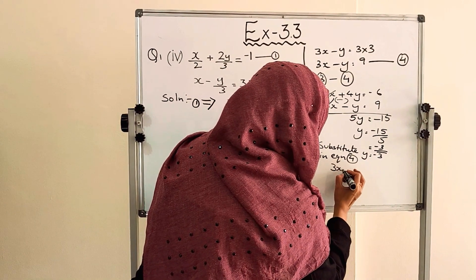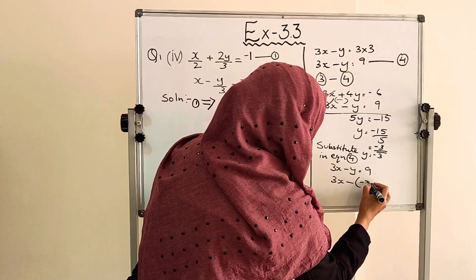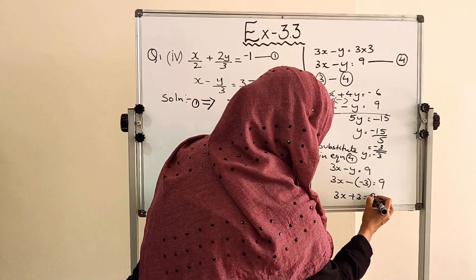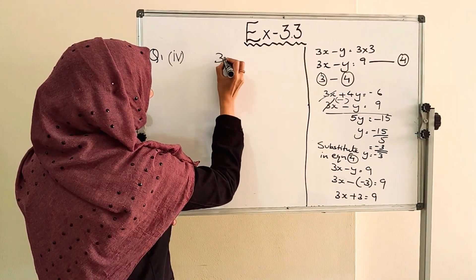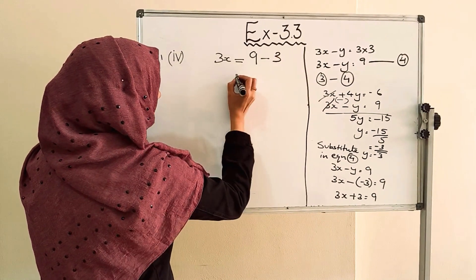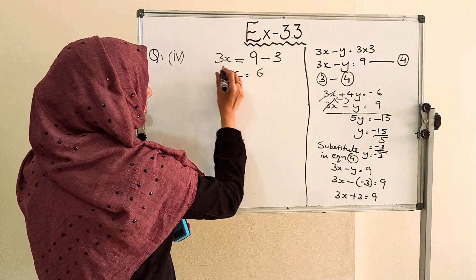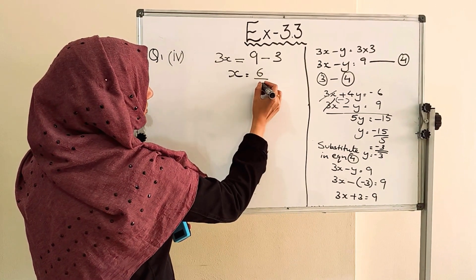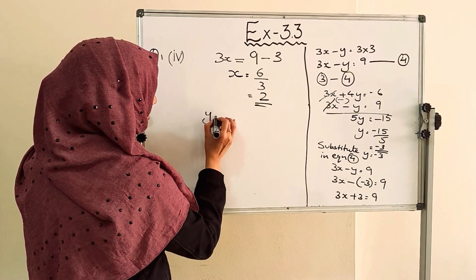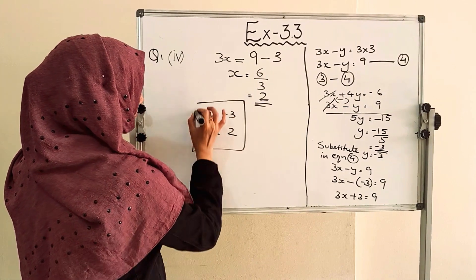Substituting y equals minus 3 into equation number 4: 3x minus (minus 3) equals 9, so 3x plus 3 equals 9. Taking 3 to the other side: 3x equals 6, and x equals 6 by 3, which equals 2. So we got y equals minus 3 and x equals 2. This is our answer.